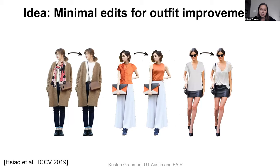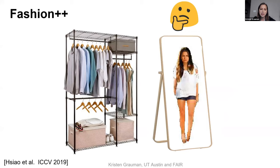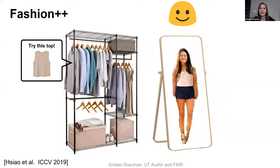Taking that as inspiration, we started thinking about the problem of minimal edits for outfit improvement. This is an interesting task both for real-world application and for technical challenges, because pretty small numbers of pixels can have a big difference on how the look is perceived. The approach we developed is called Fashion++, which incrementally improves fashionability without totally redoing the outfit. The input is an image of an outfit, the output is an image with an improved look, and we can also find an item in an inventory that best matches visually to achieve that look.